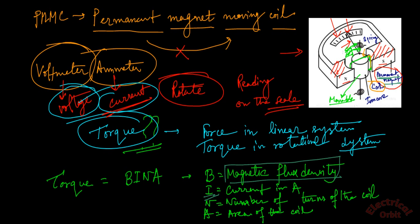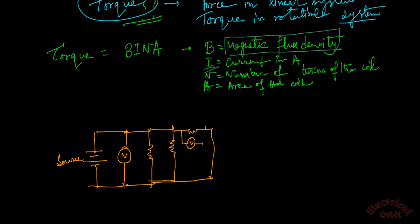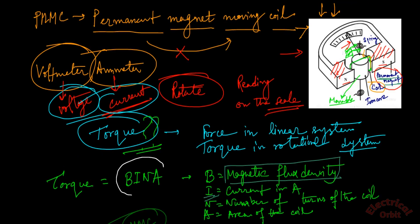This entire arrangement can be connected in parallel with a source or a load — so this voltmeter is nothing but a PMMC instrument. Similarly, if we want to determine the current in a particular branch, we attach a PMMC instrument in series with that branch. In our question, since it is used as a voltmeter, it is connected in parallel. The multiplication of all these quantities B, I, N, A is the reason for generating the torque.